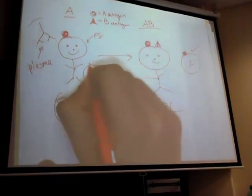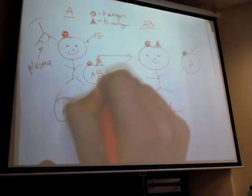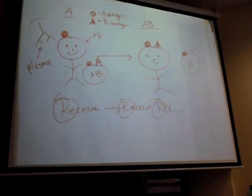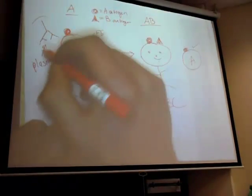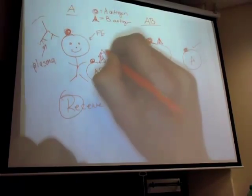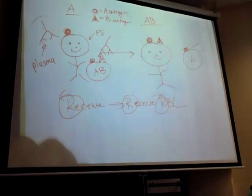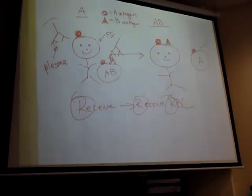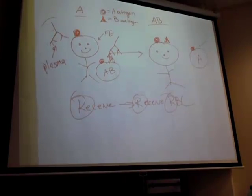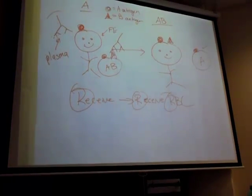But if AB tried to go into type A, the anti-B antibody in A is going to attach right onto the B antigen and cause a big clump and hemolyze. When cells clump - agglutinate - that's a signal sent to macrophages, the big cell eaters, which come and break them up, causing hemolysis.